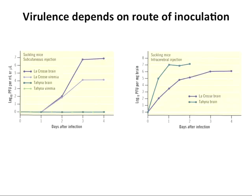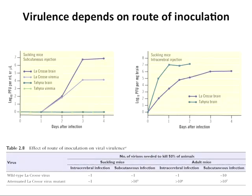The route of inoculation can make a big difference; you certainly have to have the same route to compare virulence. Here's another example with two different LaCrosse viruses and two different mouse ages — suckling versus adult — via intracerebral versus subcutaneous inoculation. The LD50 of one virion will kill 50% of suckling mice intracerebrally, but subcutaneously you need 10 times more. For the attenuated mutant, intracerebral suckling mice need just one PFU, but subcutaneously over 100,000 PFU are needed, and over a million for adult mice.